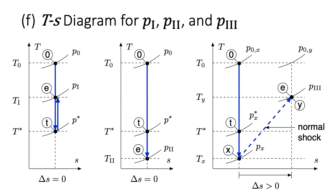Before we begin our analysis, let's look at the temperature-entropy diagrams for these three cases. For the first two cases, the flows are both completely isentropic and lie on vertical lines. For the first figure, the flow goes down to the critical temperature but then returns up to state 1. For the second figure, the flow goes down to the critical temperature and continues down to state 2 below it. For the third figure, the diagram resembles that from Part A, except that the exit state E and the location just after the normal shock at state Y both also correspond to state 3.